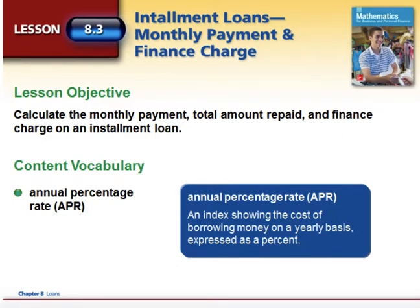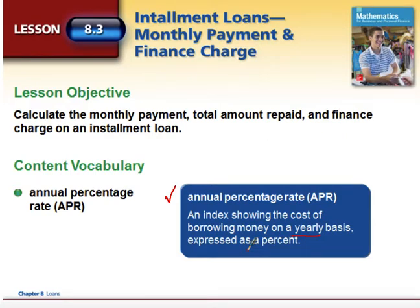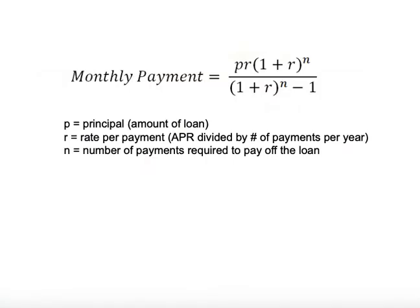Today we're calculating installment loans — specifically, what our monthly payment will be and how much finance charge was charged to the account. The first vocabulary word to understand is APR, our annual percentage rate. That's the index showing the cost of borrowing money on a yearly basis, expressed as a percent. An APR of 12% per year means a monthly percentage rate of only 1%, since we need to calculate the payment percentage.